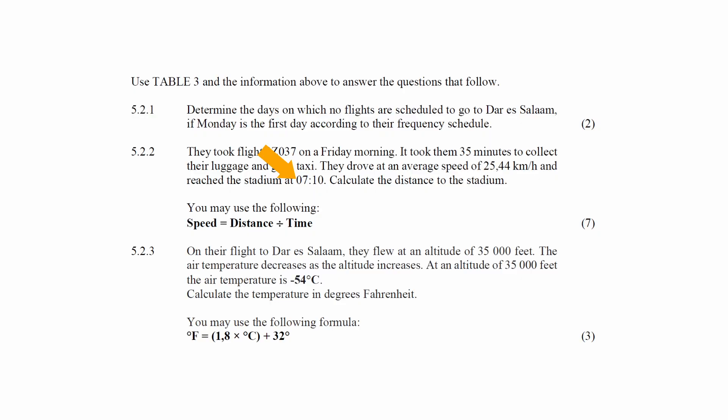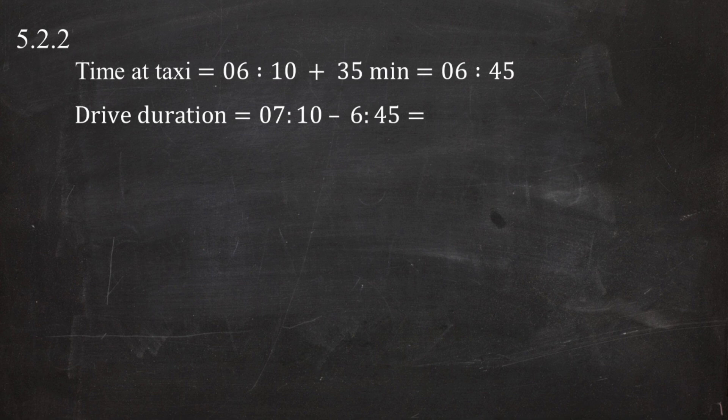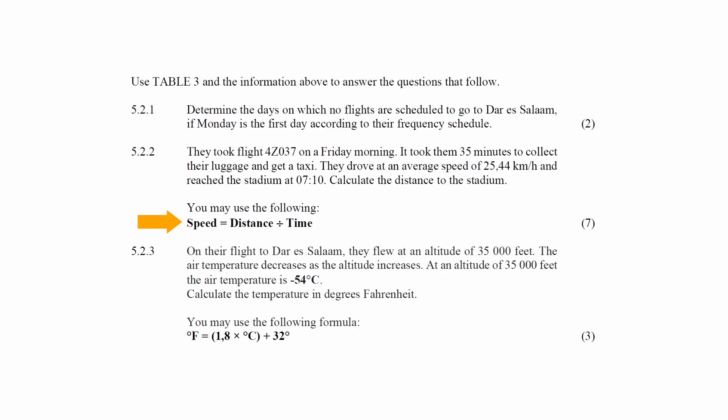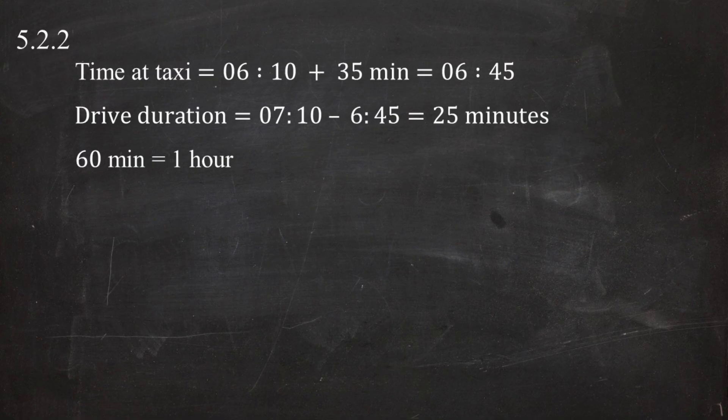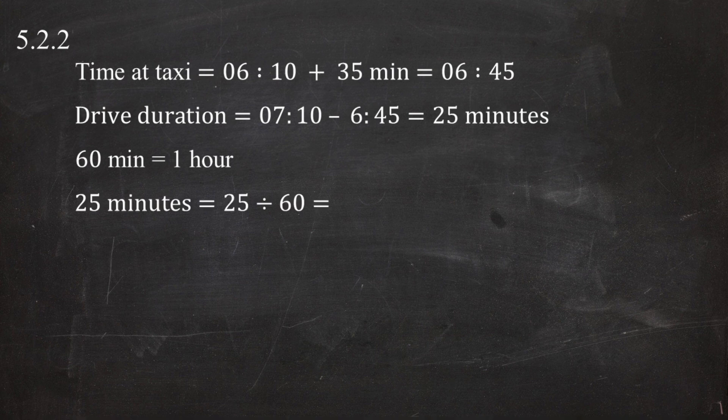The formula requires speed in kilometers per hour, distance in kilometers, and time in hours. Since the drive duration is 25 minutes, we convert it to hours: 25 divided by 60 equals 0.416666 hours.